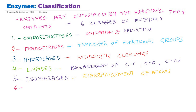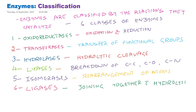The last class is the sixth class — ligases. Ligase means joining, so these enzymes join two compounds together. This process of coupling or joining is also associated with hydrolysis of ATP; they require energy, which is supplied by hydrolysis of ATP. So joining of compounds coupled with hydrolysis of ATP is catalyzed by the sixth class of enzymes, called ligases.